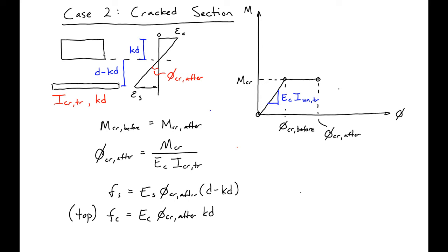we reach our yield point of the steel or about 70% of our concrete compressive strength. In this range, I will have a slope of EC times I cracked transformed.